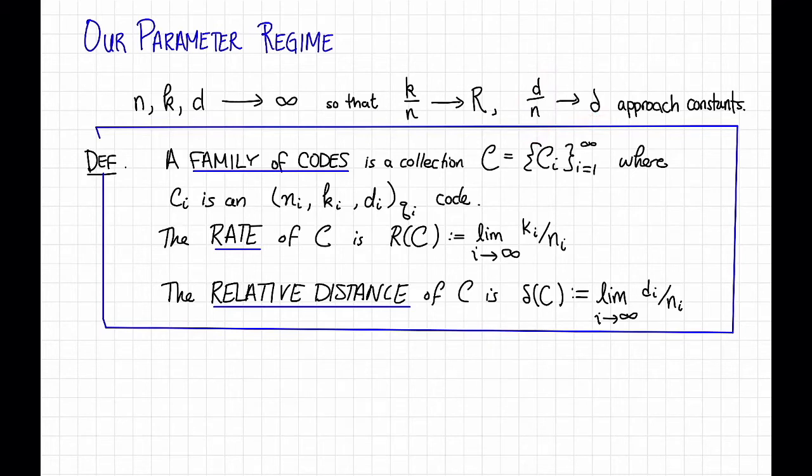There are several reasons why we're going to assume this. First, as we said on the previous slide, this is going to make it easier to understand what's possible and what's not. We can just focus on R versus delta, for example, and ignore n, k, and d, as long as they're all sufficiently large. Second, it will allow us to talk meaningfully about computational complexity. And of course, third, this parameter regime is reasonably relevant for a lot of different applications.